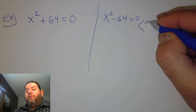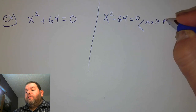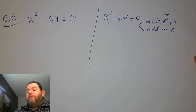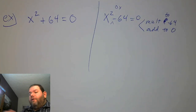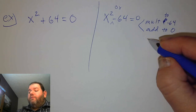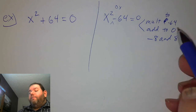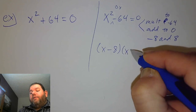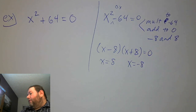For x squared minus 64 equals 0, we need two numbers that multiply to negative 64 and add to 0. The answer is negative 8 times 8: multiplies to negative 64 and adds to 0. So that factors as x minus 8 times x plus 8 equals 0. We get x equals 8 and x equals negative 8.